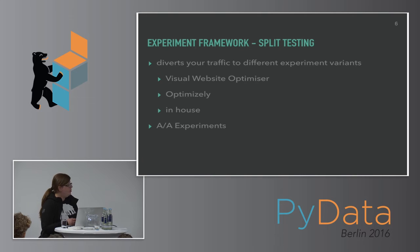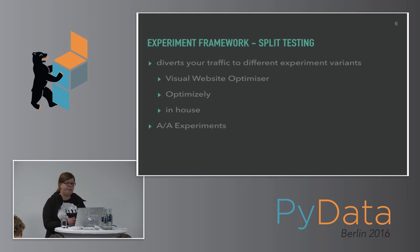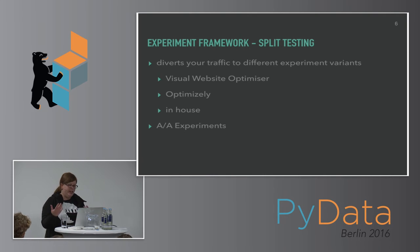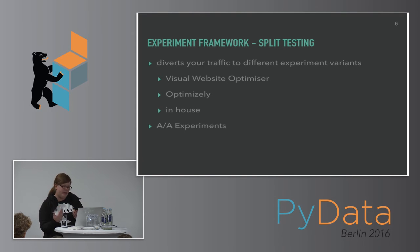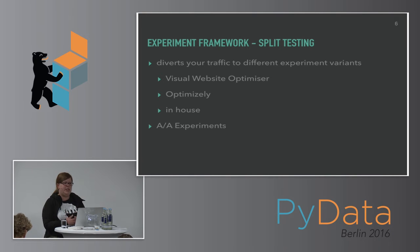What you should also do — and what's very important — is run AA experiments, which is a dummy experiment. You split your traffic to exactly the same version of your website. If you see a significant difference between the two versions although you're showing users exactly the same thing, that's an indicator that how you assign users to your experiment actually has a bug.